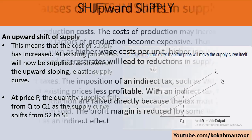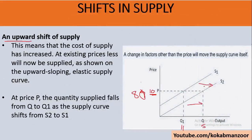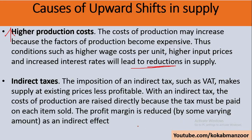Conversely, if the cost of production increases, the profit margin is reduced. The supplier will then reduce supply — for example, from 15 units down — because it has become more expensive and less profitable.